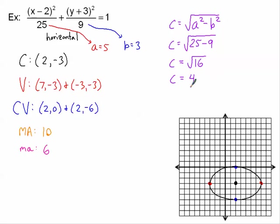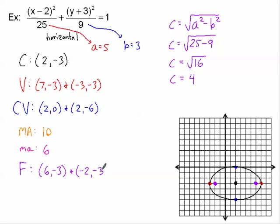Counting 4 units left and right from the center along the major axis gives the two focal points. One focus is at (6, −3) and the other is at (−2, −3). That completes the picture of the horizontal ellipse.